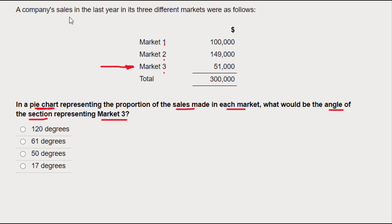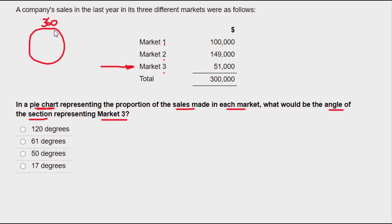Just organizing in my mind before I do the calculations, I need to remember what a pie chart is. It's a circle that represents our data. Do you remember how many degrees there are in a circle — what's the angle all the way around? Yes, it's 360 degrees all the way around.